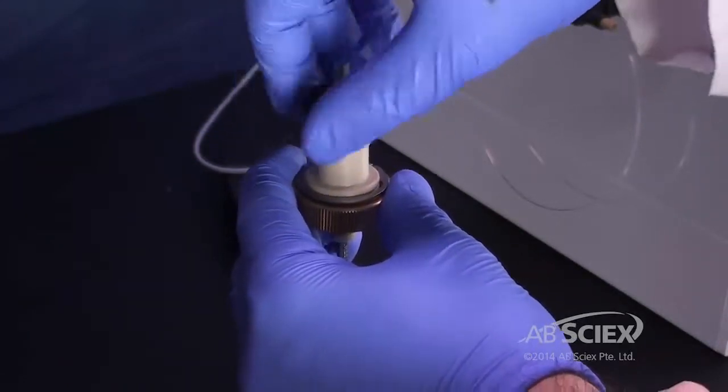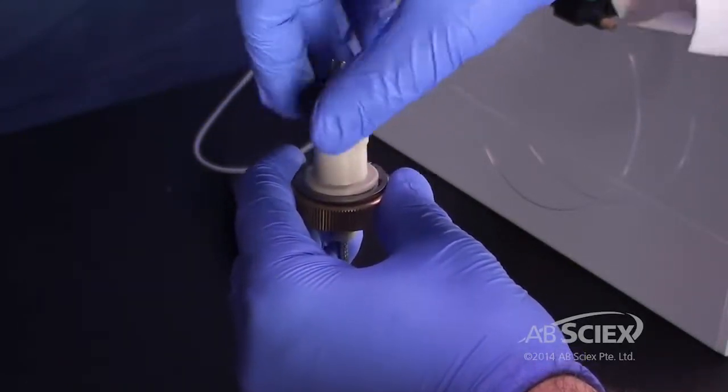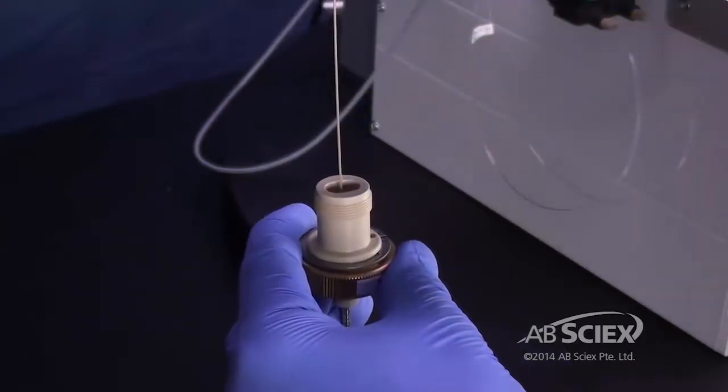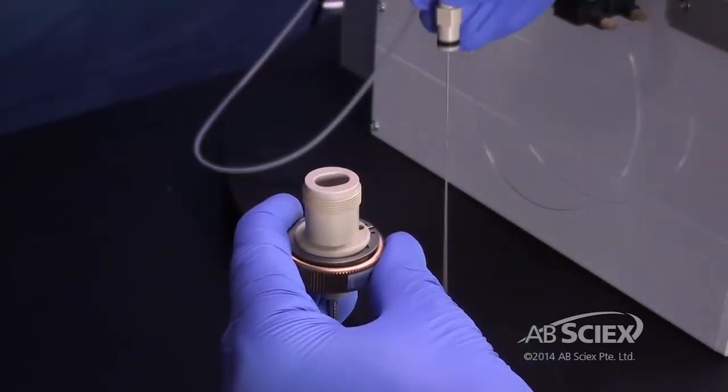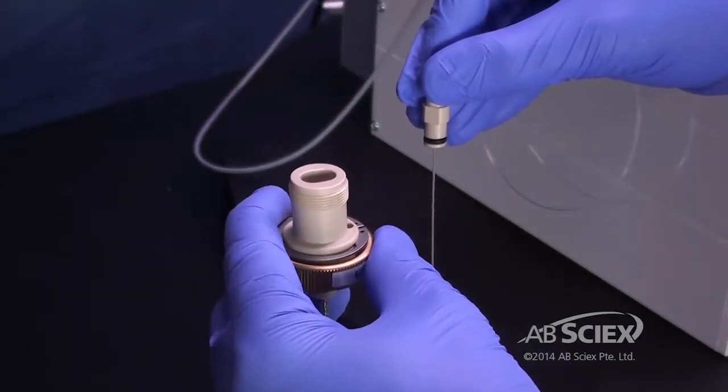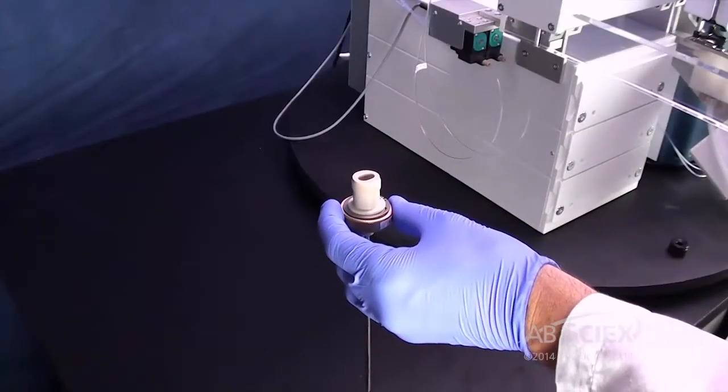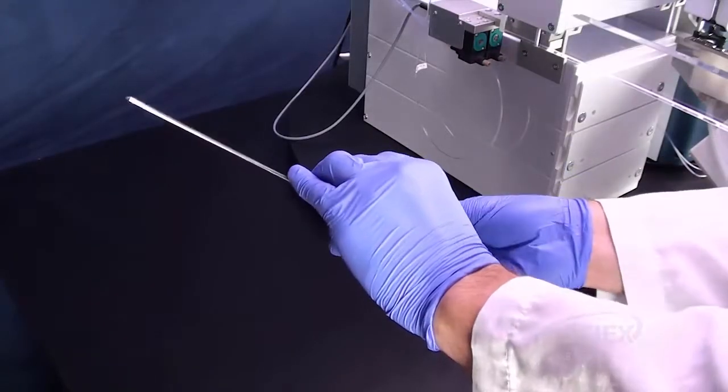Remove the black electrode adjustment cap and holding the probe with the tip pointing downwards, pull the electrode from the probe. Holding the probe downwards will prevent the internal spring from falling out.